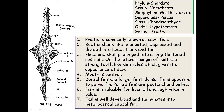The first dorsal fin is opposite to the pelvic fin. The fish is valuable for its liver oil and high vitamin content. The tail is well developed and terminates in a heterocercal caudal fin, meaning both sides differ in size and shape.